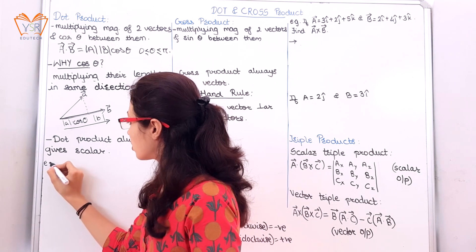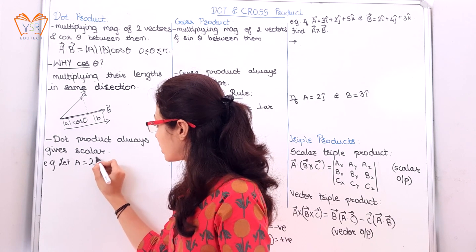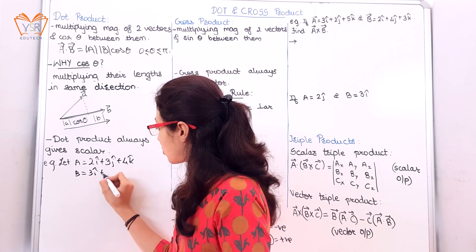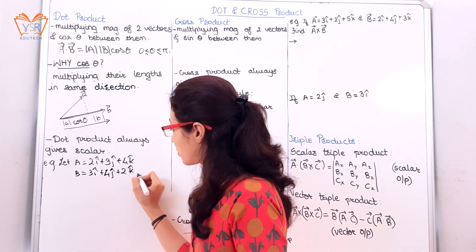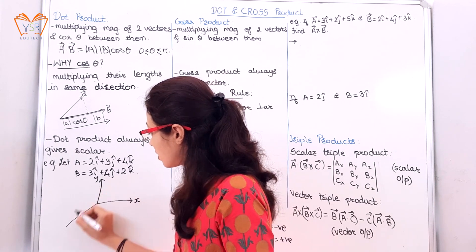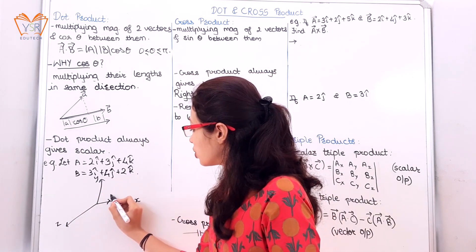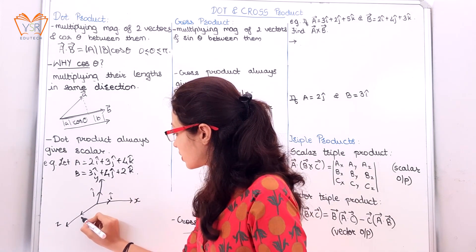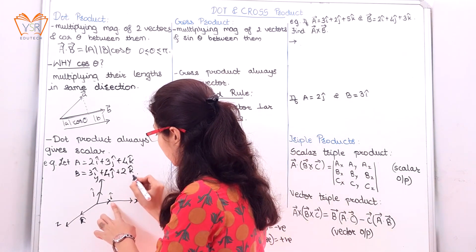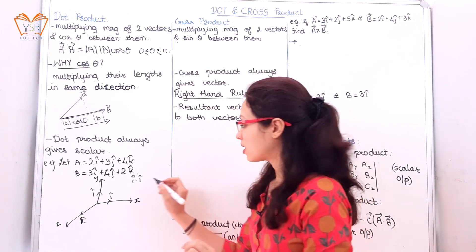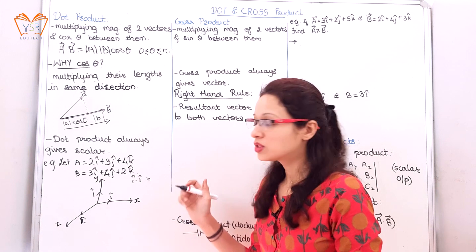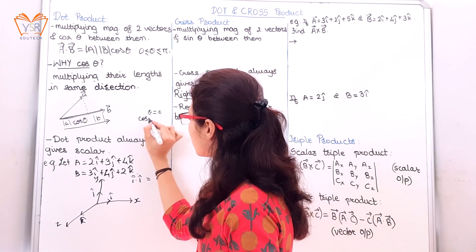We will understand it more with an example. Let a⃗ = 2î + 3ĵ + 4k̂ and b⃗ = 3î + 4ĵ + 2k̂. Consider the three coordinate axes x, y, z and unit vectors along them respectively î, ĵ, and k̂. For dot product, î · î — since both unit vectors are along the x direction, the angle between them is 0, and cos0 = 1.